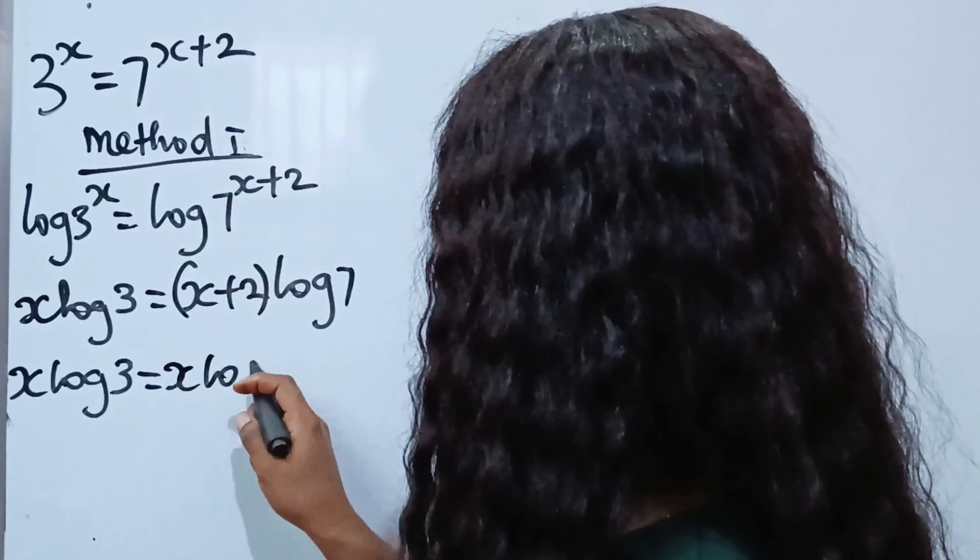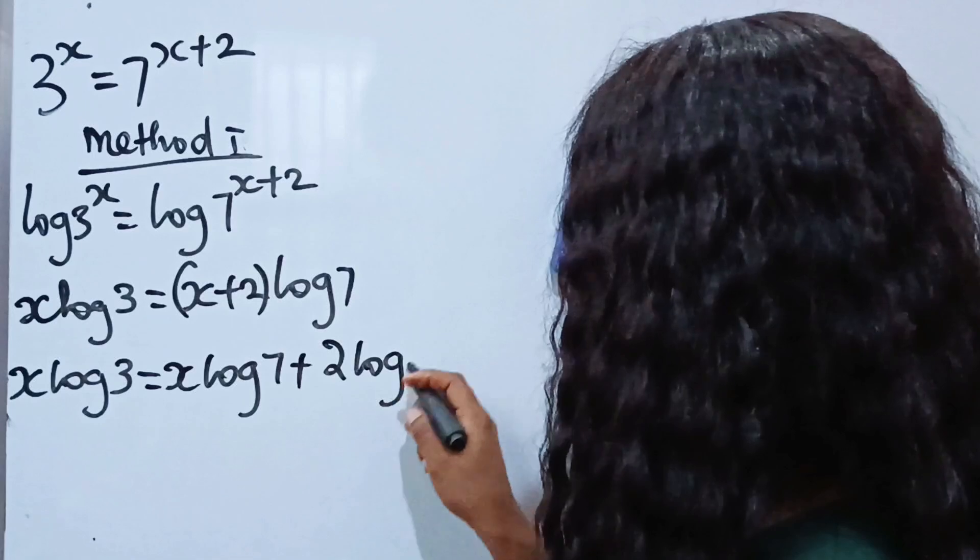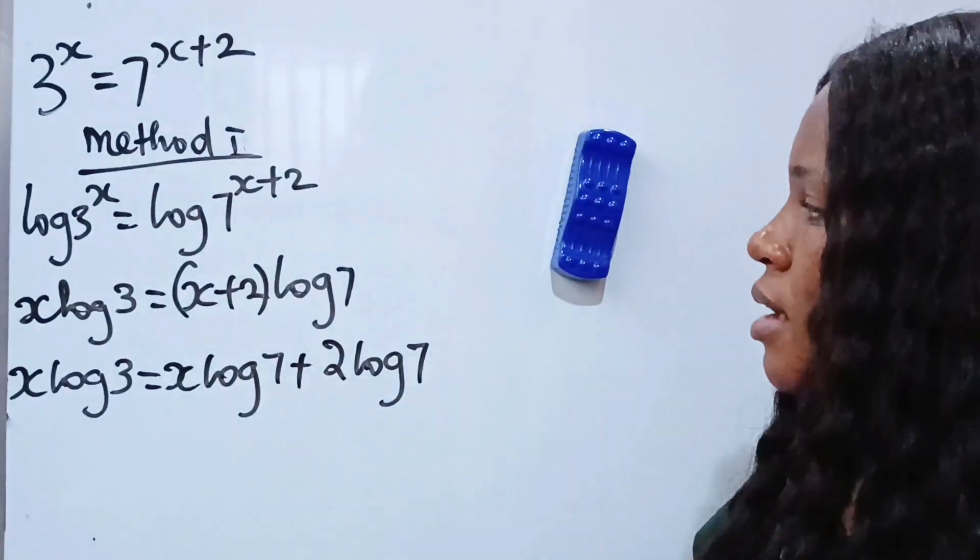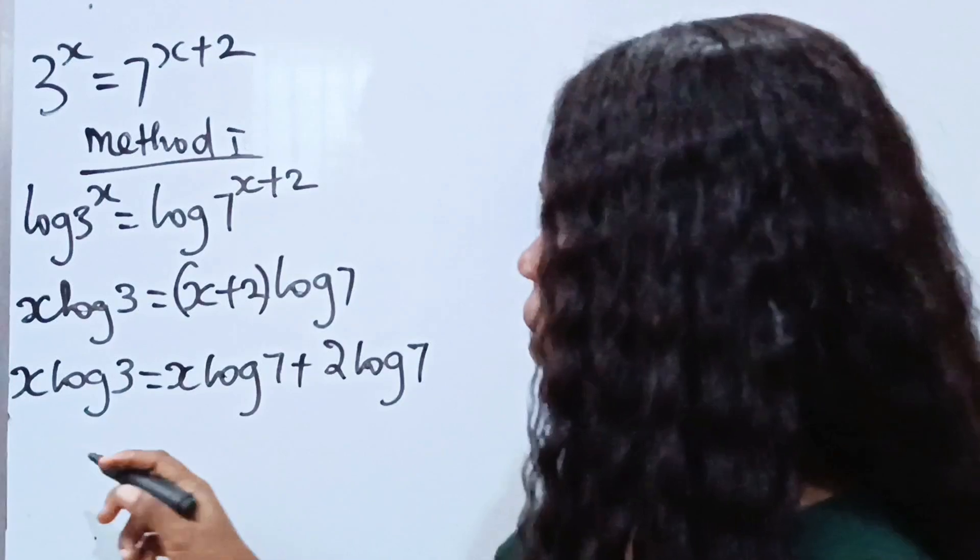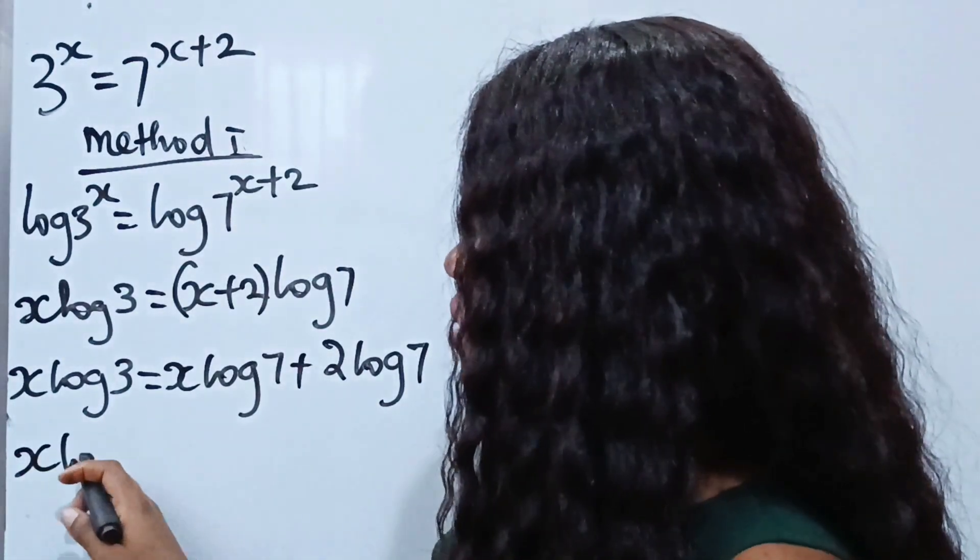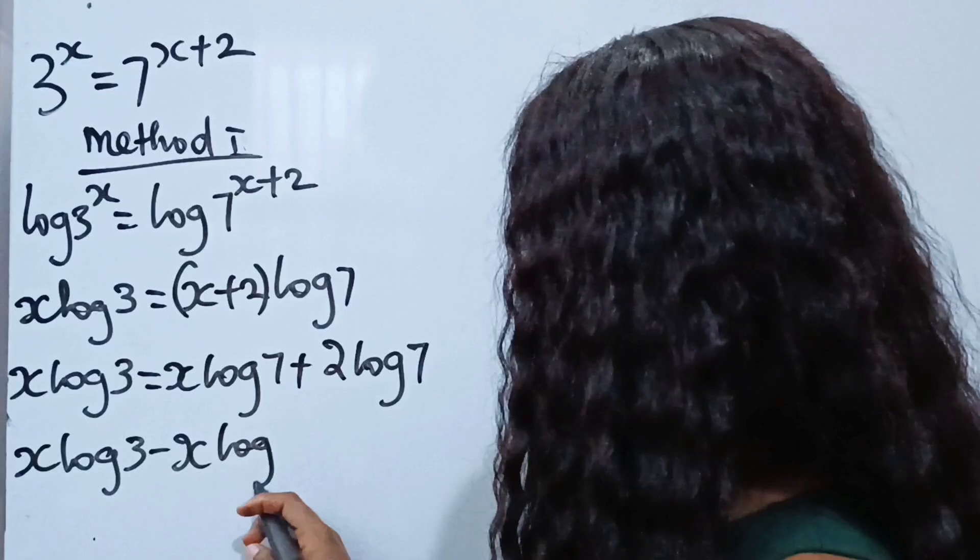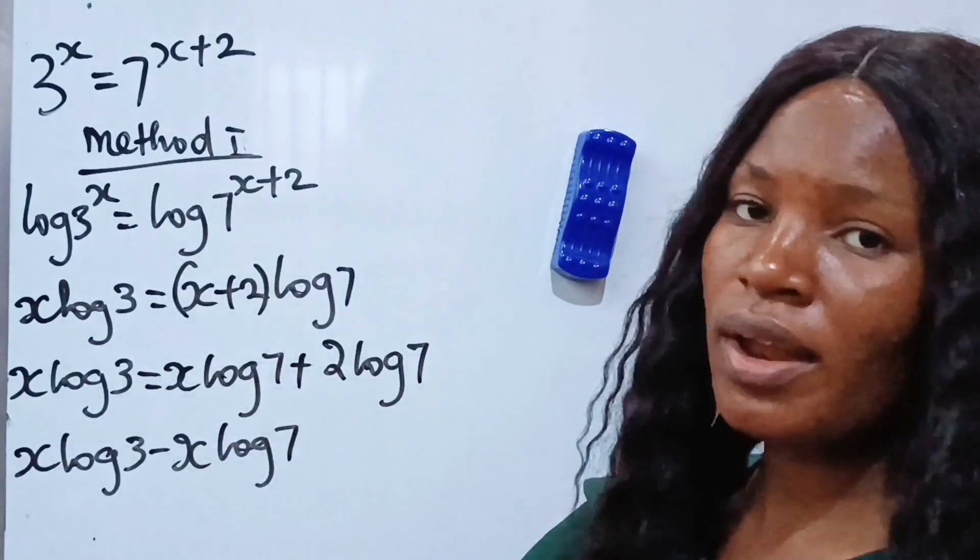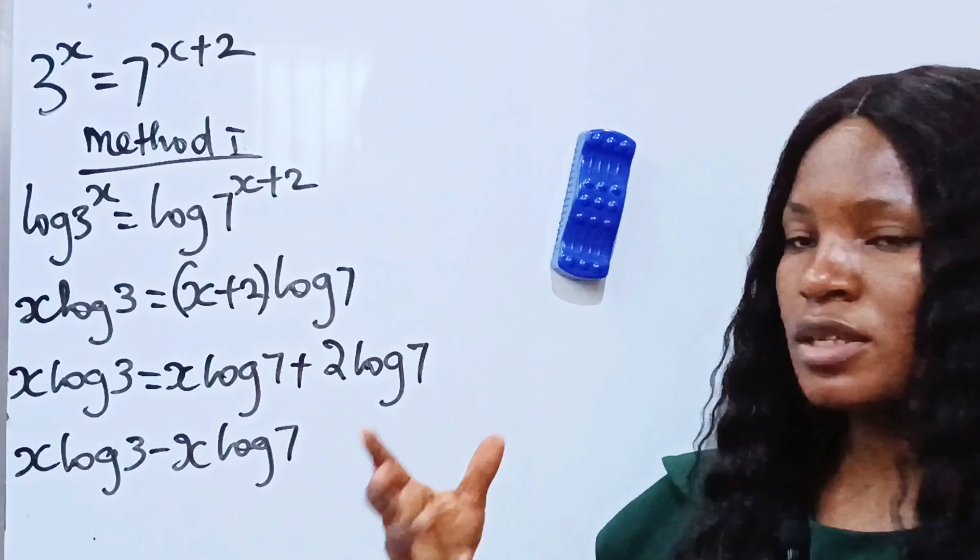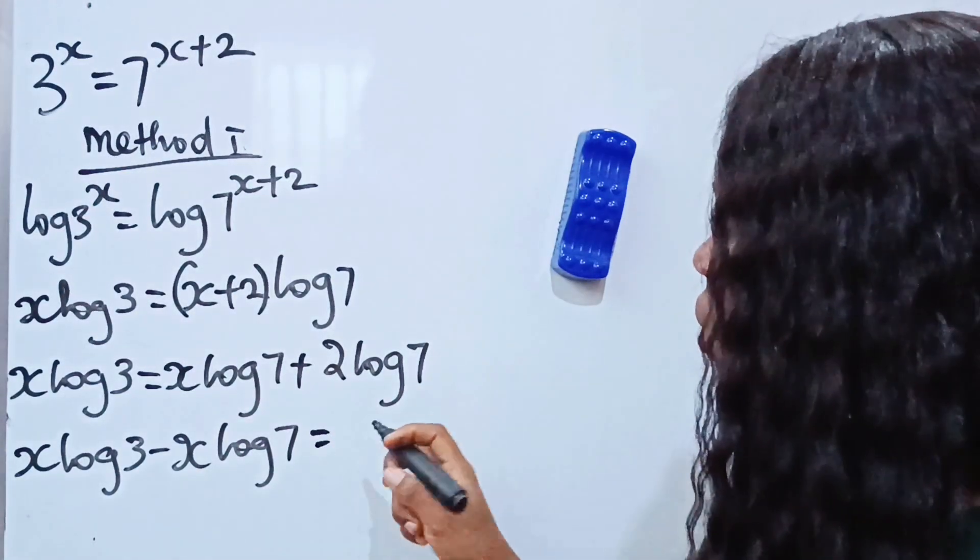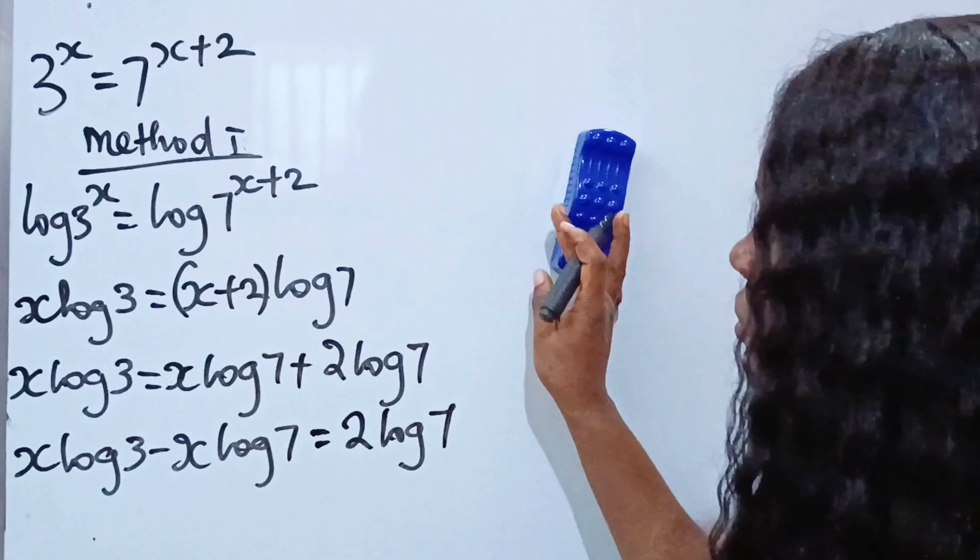plus log 7 times 2 will give us 2 log 7. Now let's collect like terms. If we collect like terms, we have x log 3 minus x log 7. That is, I brought this to the other side, and by doing that I introduce minus because this is plus x log 7. It equals 2 log 7.